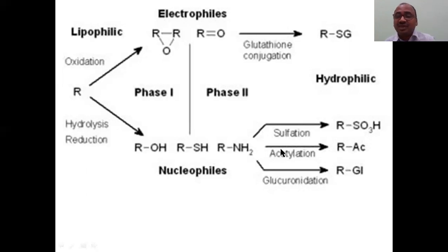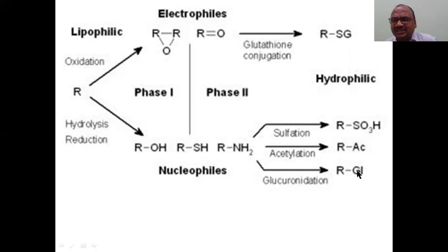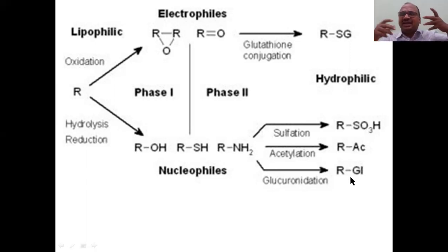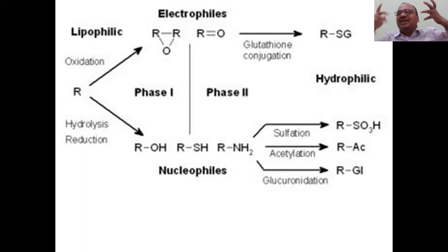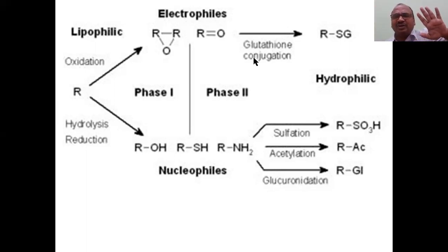Phase 2 reactions include glutathione conjugation (making a link), sulfation (addition of a sulfur group), acetylation (addition of an acetyl group), and glucuronidation (addition of glucose — since glucose is hydrophilic, the molecule becomes more hydrophilic). There are five types of Phase 2 reactions — this is a very important point.